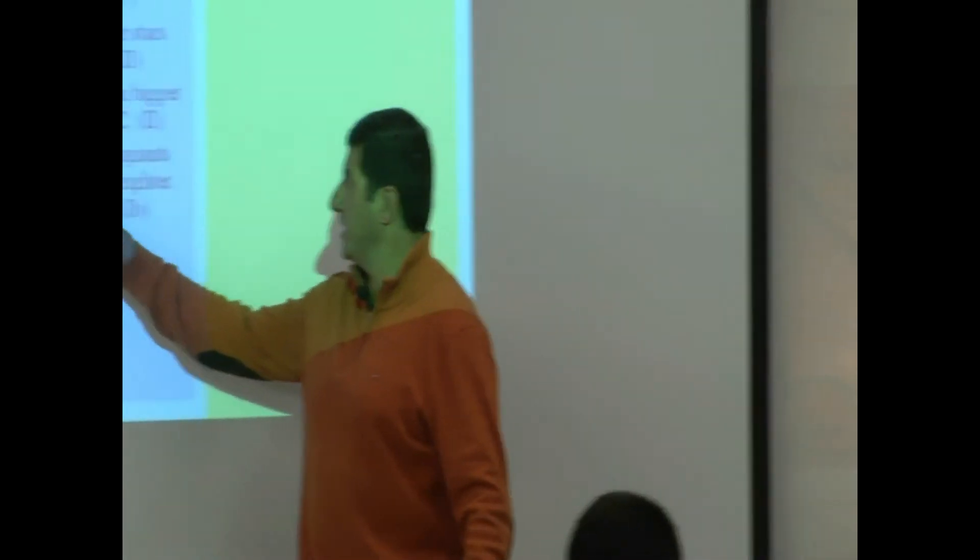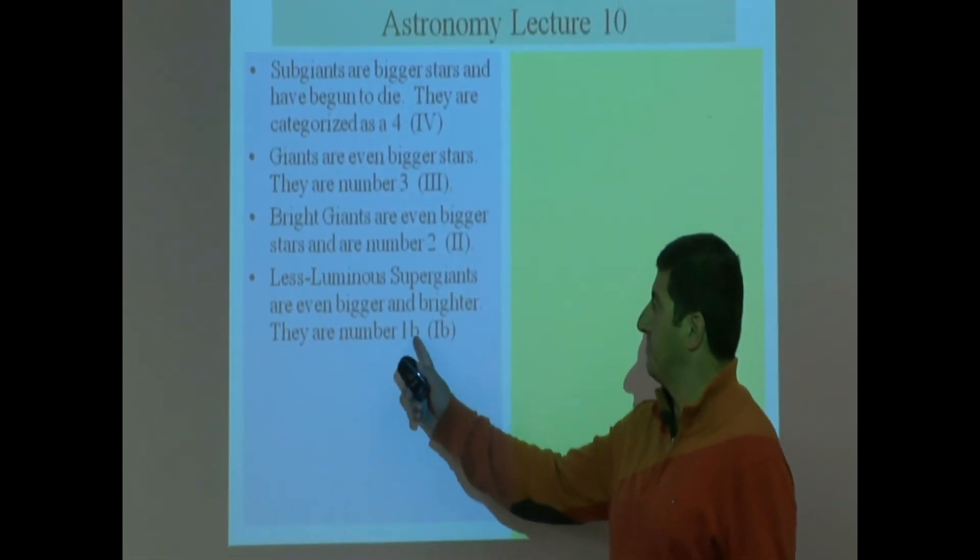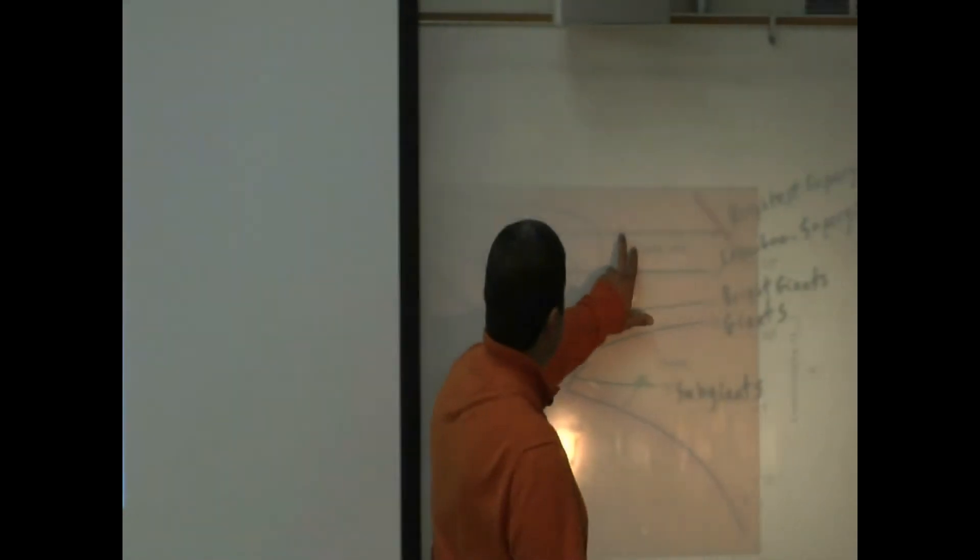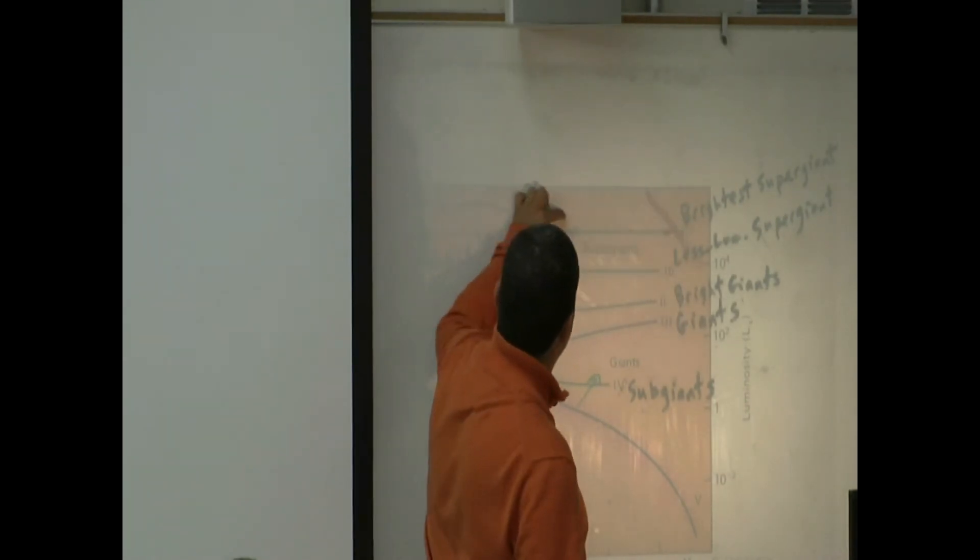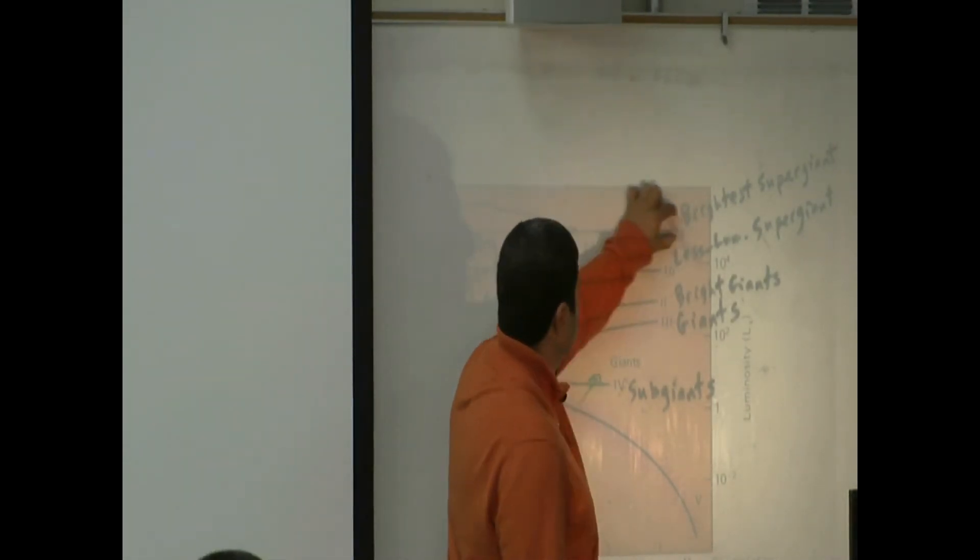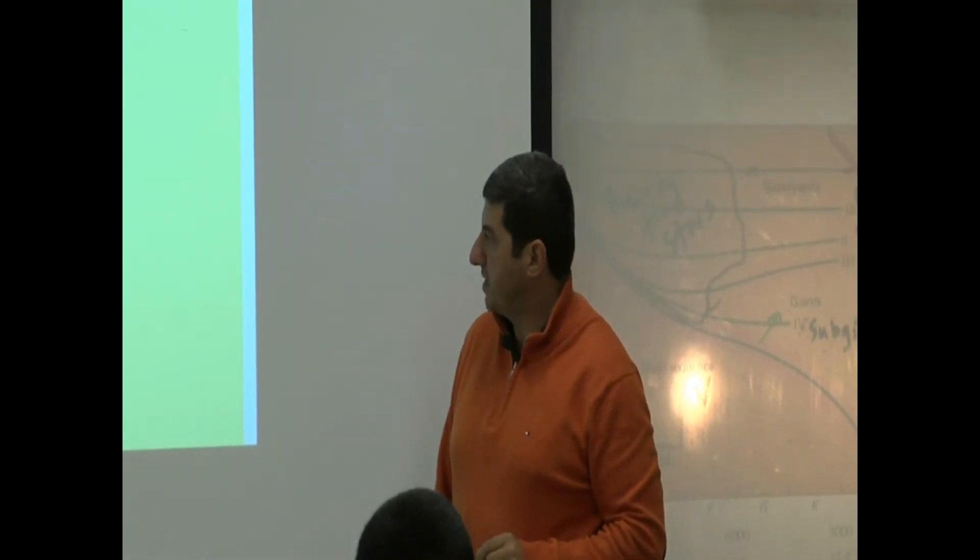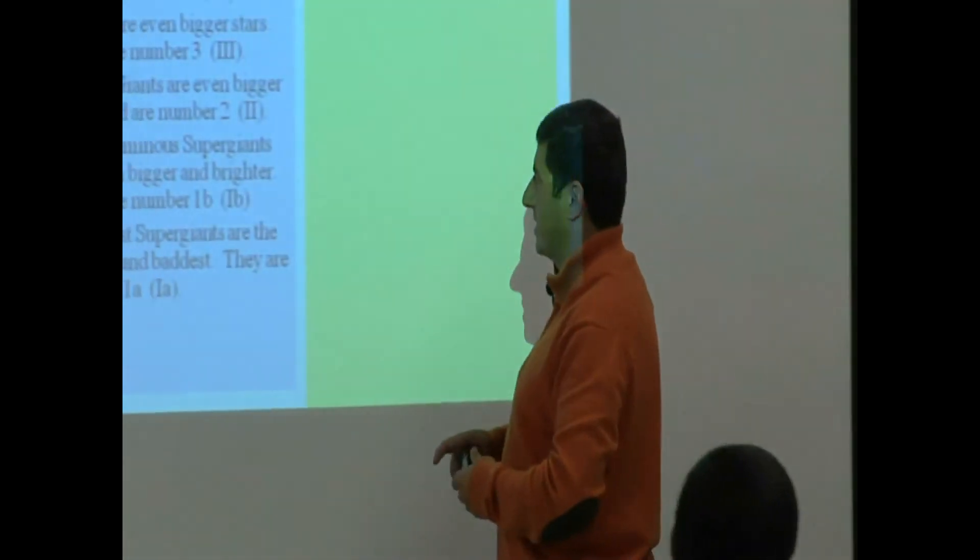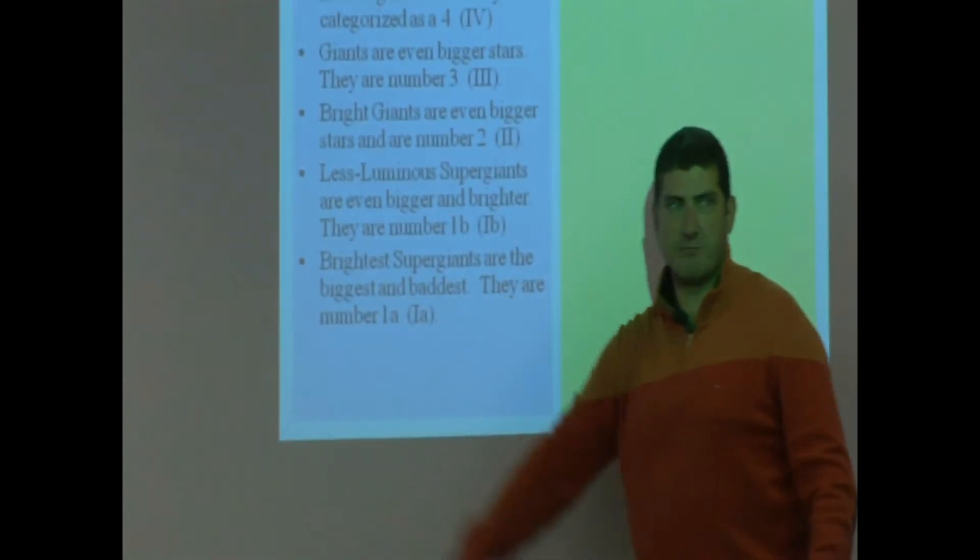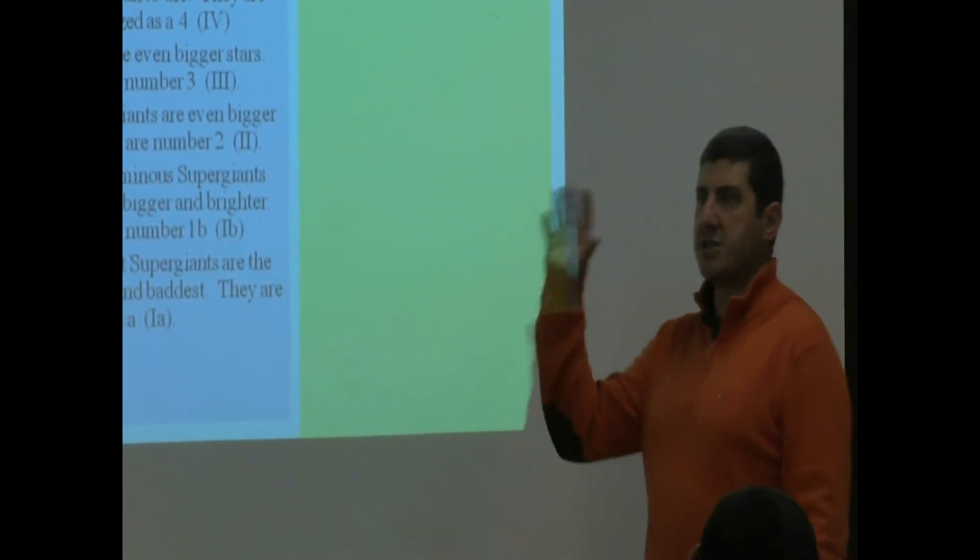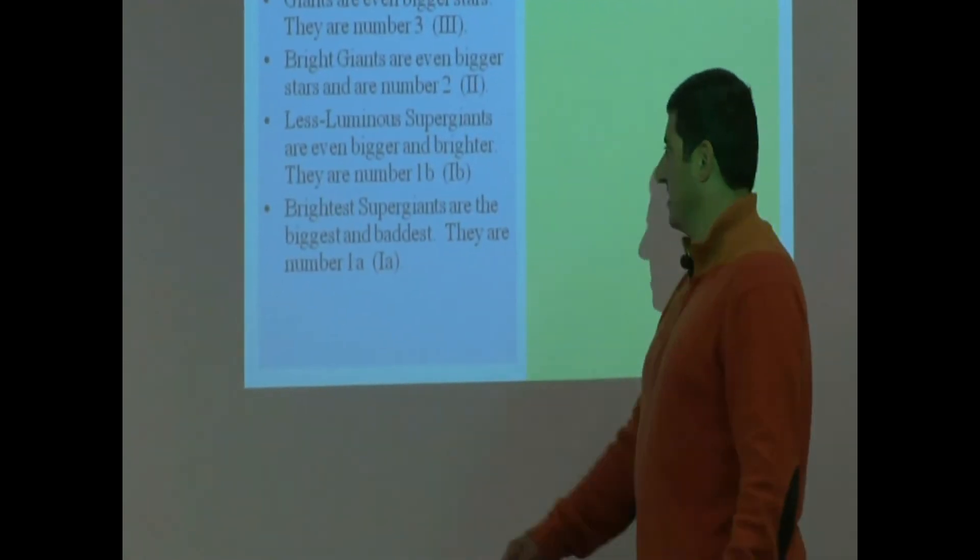Supergiants are even bigger and brighter. They are number Ib, and then brightest supergiants would be way over here, right along this strip. That's brightest supergiant. I kind of jokingly said they are the biggest and baddest—the biggest stars, brightest stars, and baddest stars. They are number Ia.